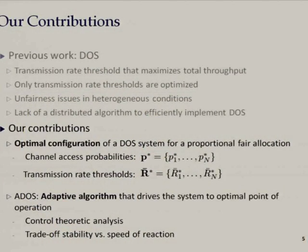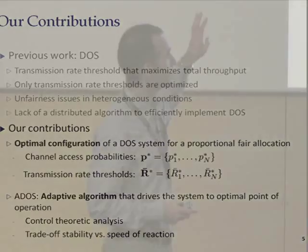Our contributions are: first, we conduct a joint optimization to find the optimal access probabilities and threshold configuration. In previous work, to optimize transmission rate thresholds, you need global information. What comes out of our work is that we can optimize them locally — but it's not straightforward, and it's not granted that local information is sufficient to do that.